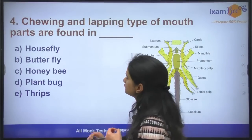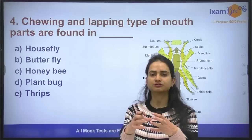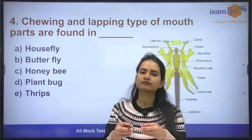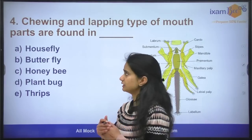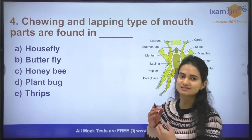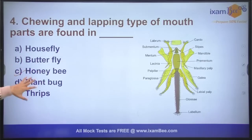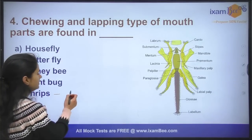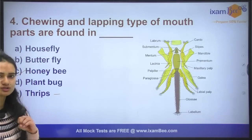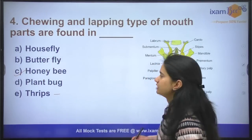Question number four: chewing and lapping type mouthparts are found in which insect? The answer is honeybee. There are different types of mouthparts — for example, thrips have rasping and sucking type mouthparts. You can tell in the comment box what type of mouthparts are found in house fly and butterfly and how they are modified.